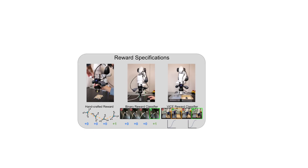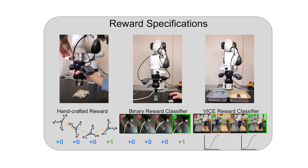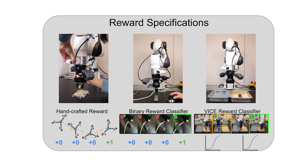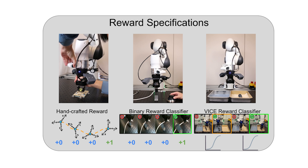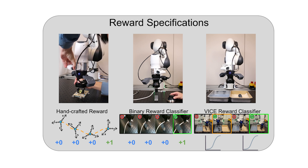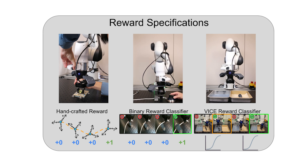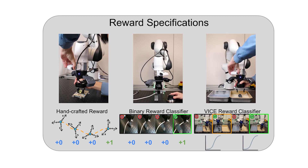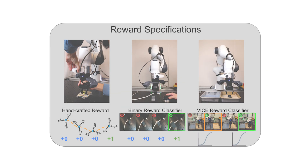We also include an arsenal of reward specification methods, including hand-crafted rewards from ground truth state information, binary classifier rewards from positive and negative images, and a VICE reward classifier that learns a reward function during RL training.